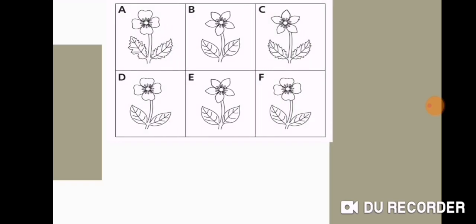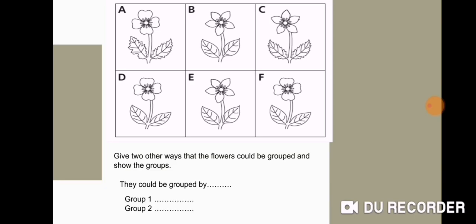Okay, this is your homework. Give two other ways that the flowers could be grouped and show the groups. They could be grouped by what? Give two other ways and write the groups. Show your groups: group one and group two. Thank you for watching.